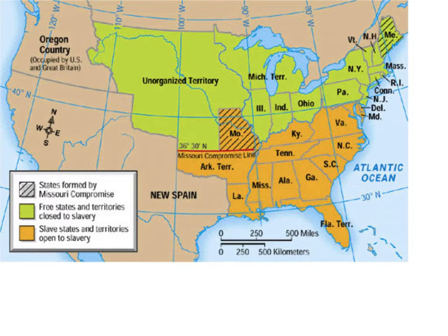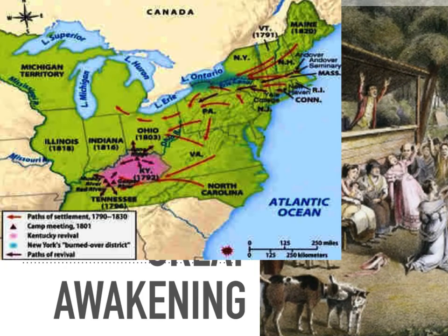We have to consider what happens from 1820 to 1860 that throws that balance out the window and makes compromise no longer possible. The first and most important factor will be a sense of moral change that's going to sweep across the country, known historically as the Second Great Awakening.